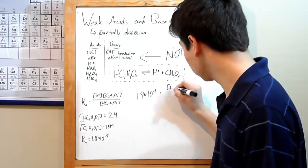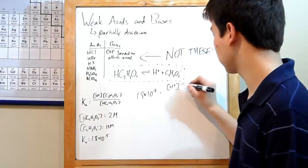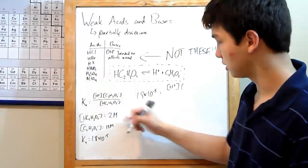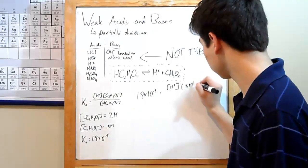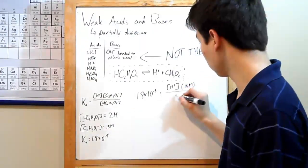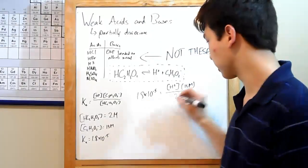You don't know the concentration of your H plus ions. You're trying to find that out. Your concentration of acetate ion, you do know. That's 15 molar. You also know your concentration of your vinegar, 2 molar.